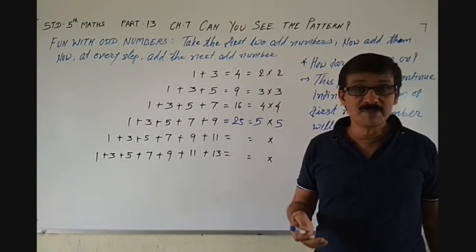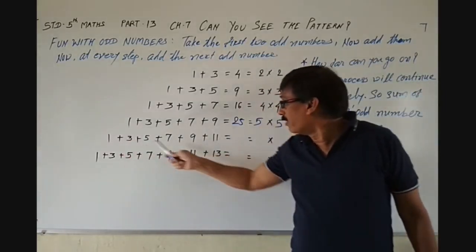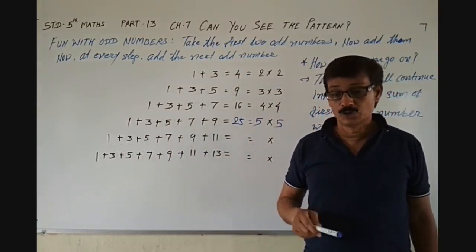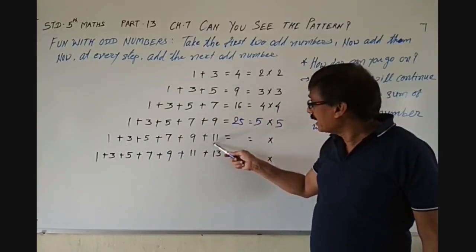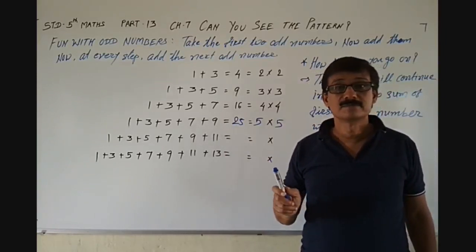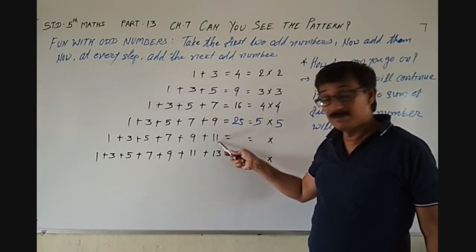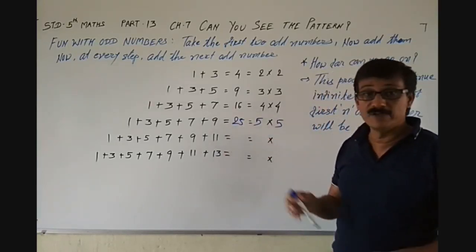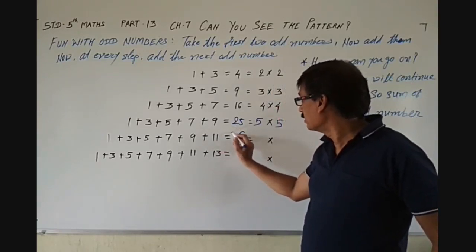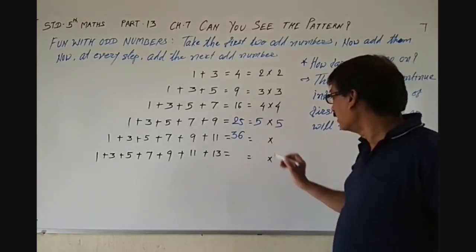After 9, the next consecutive odd number is 11. You need not add from 1 to 9 again, because from 1 to 9 the addition is 25 — we already know that. So add only 11 to 25. 11 plus 25: 1 plus 5 is 6, and 2 plus 1 is 3, so 36. And 36 is 6 multiplied by 6.